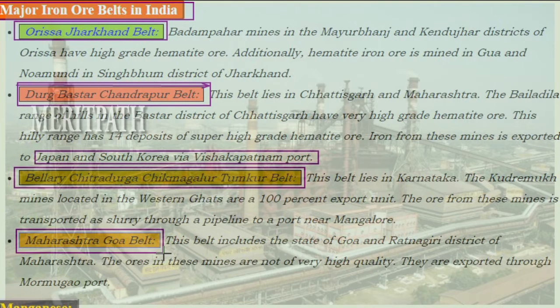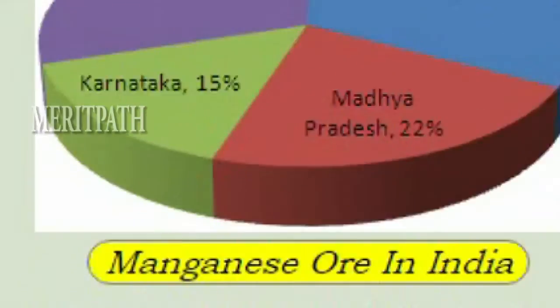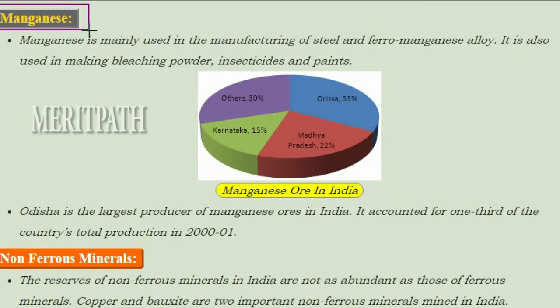The Maharashtra-Goa belt includes the state of Goa and the Ratnagiri district of Maharashtra. The ores in these mines are not of very high quality and are exported through Mormugao port. Now let's look at manganese ore and its uses.